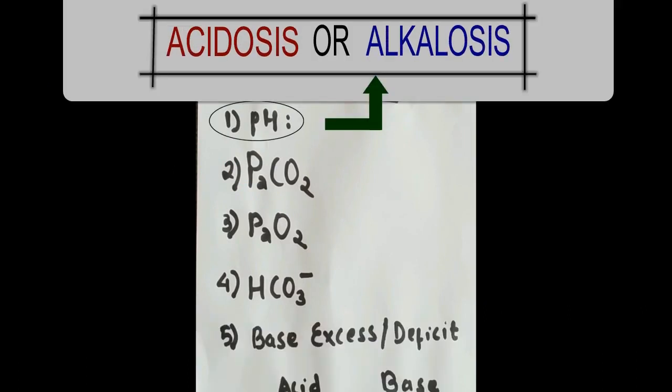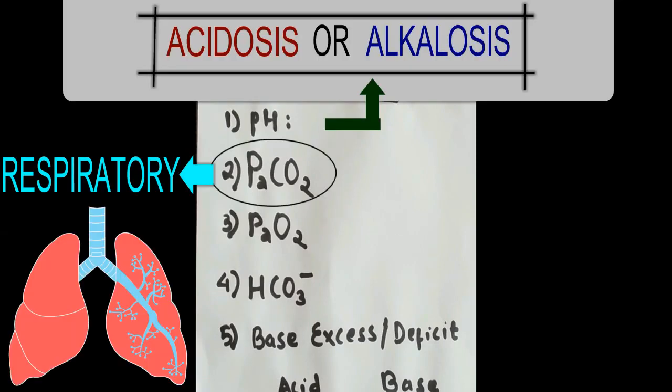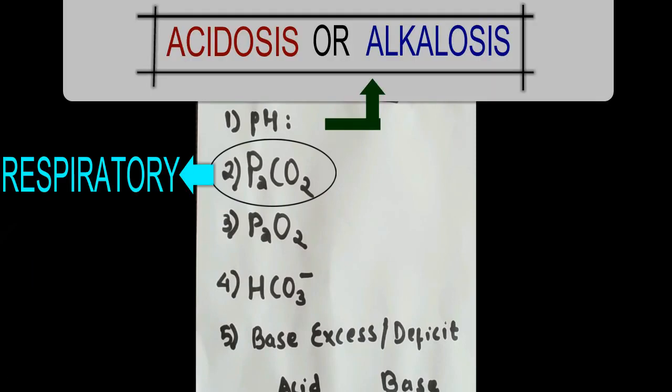pH of blood determines acidosis or alkalosis. PaCO2 is the respiratory component. Its value determines if the cause is respiratory or not.